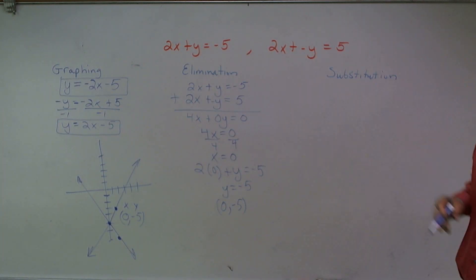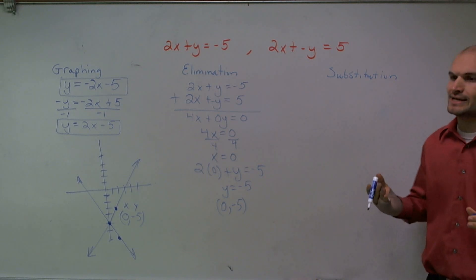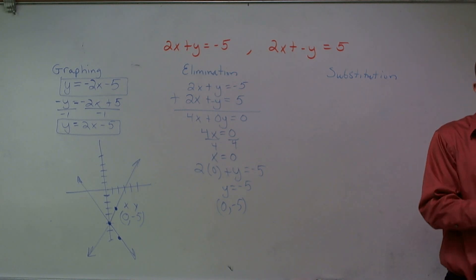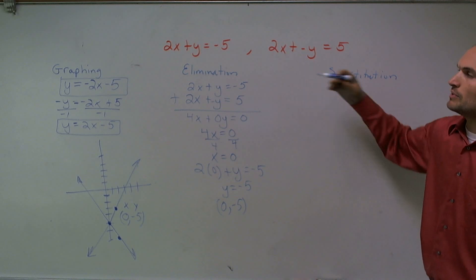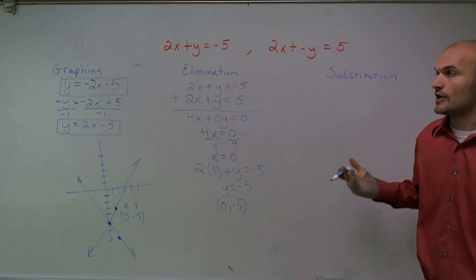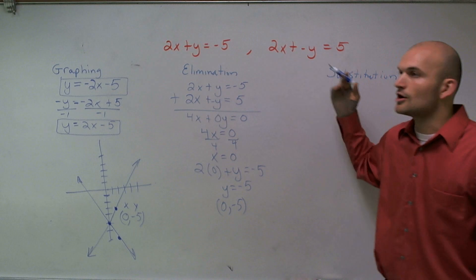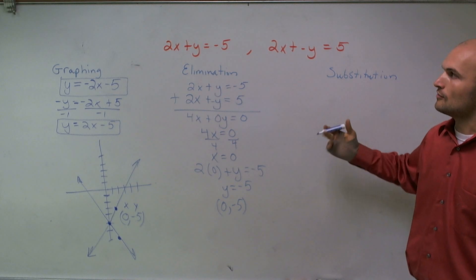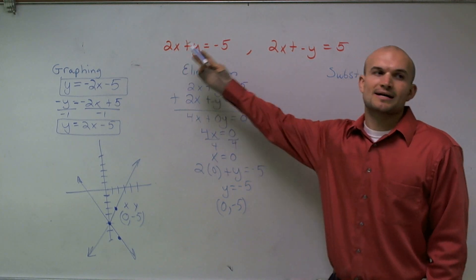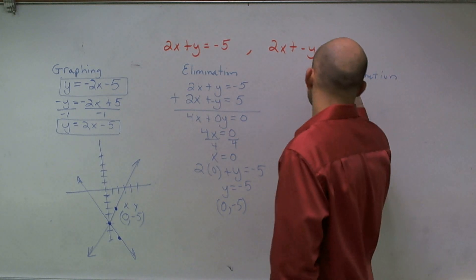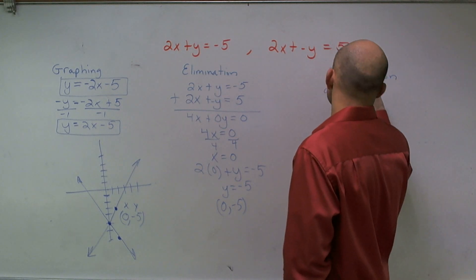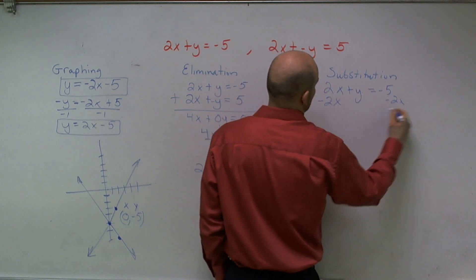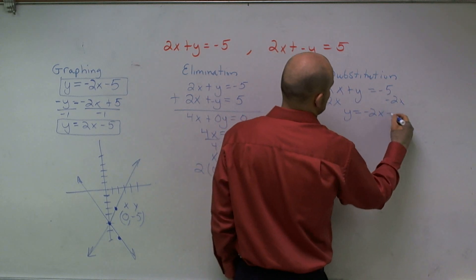Last way I'd like to show you is substitution. When doing substitution, what you're doing is you're substituting one value, one equation into the other equation. So when you're doing that, you're going to have to solve for a variable. Now, I like how these y's are very easy to solve for. That's what I mentioned at the beginning. Since they have a coefficient of 1 and negative 1, it's very easy to solve for them. All I need to do is get the 2x on this other side, and I have y equals. So I'll subtract my 2x, so I get y equals a negative 2x minus 5.